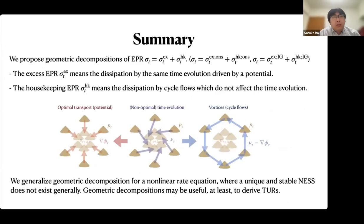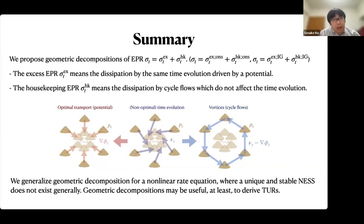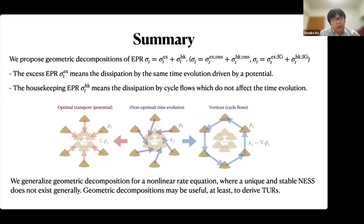That's all. In my talk, we proposed a geometric decomposition of the entropy production rate. In our decomposition, the excess entropy production rate means dissipation by the same time evolution driven by a potential, and the housekeeping entropy production rate means dissipation by a cycle flow which does not affect the time evolution. We generalize the geometric decomposition for nonlinear rate equations where a unique and stable non-equilibrium steady state does not generally exist. The geometric decomposition may be useful to derive TURs. Thank you.